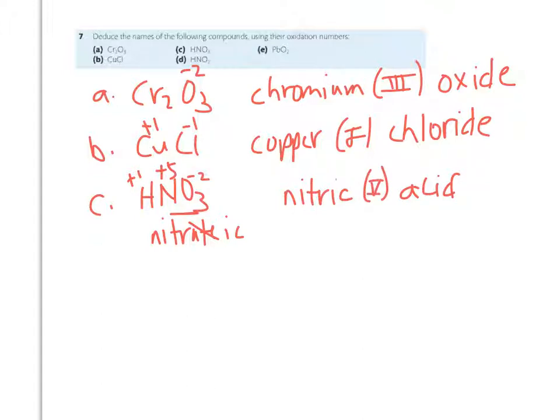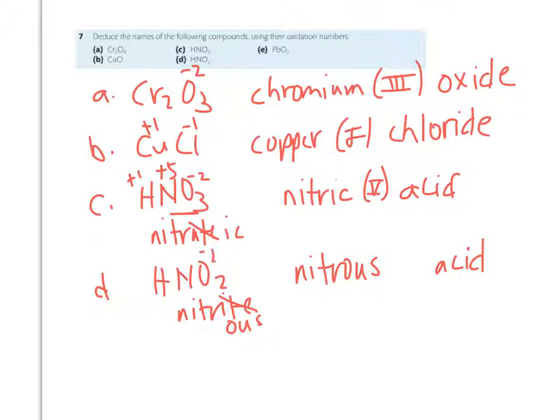D, I've got HNO2. In this case, I have a polyatomic ion that ended in ITE, nitrite. So the ITE gets changed to us, and this becomes nitrous acid. And again, I have to see what oxidation state nitrogen is in. Oxygen's still a minus two. Hydrogen's still a plus one. But now this is going to be nitrous three acid.